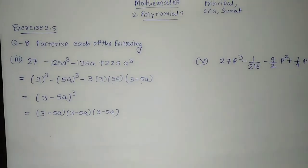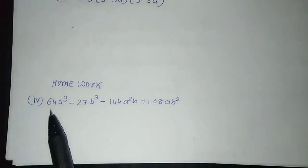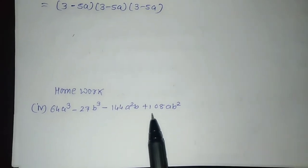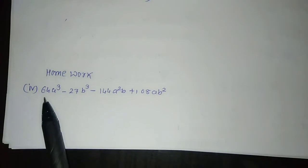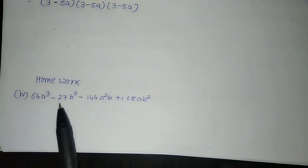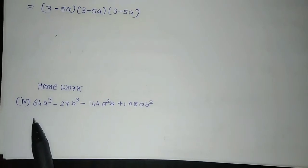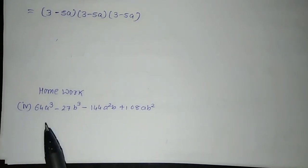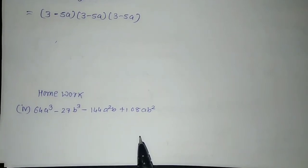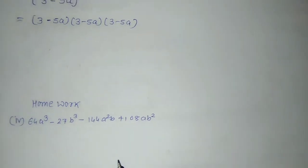I am giving you one sum as homework that you have to solve. That is the 4th one: 64a cube minus 27b cube minus 144a square b plus 108ab square. 64 is a cube of what? You have to remember and write it. Similarly, 27 is a cube of what? We already did that. You have to convert it using the formula x cube minus y cube minus 3 into x into y into bracket x minus y, and then write it as x minus y whole cube. I hope you can solve this question.